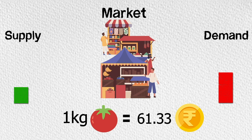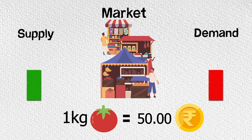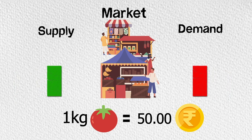Like supply, demand can equally affect prices. Suppose you get to know that tomatoes increase your IQ somehow. That day, a lot of people are waiting to buy tomatoes, but we only have the same 3 lorries, so we increase the prices. That is, we have a high demand for the same supply.